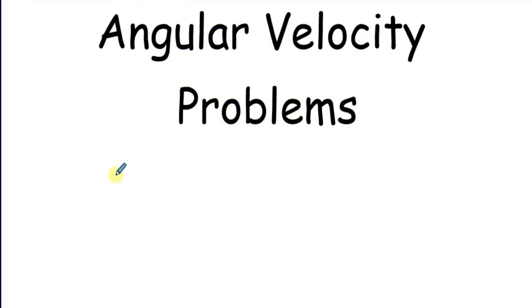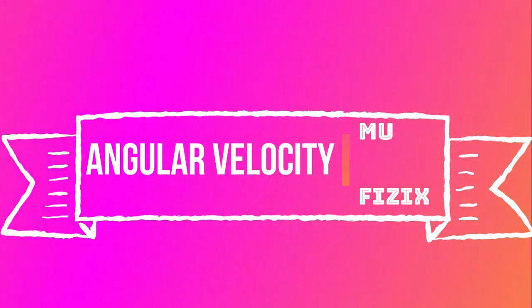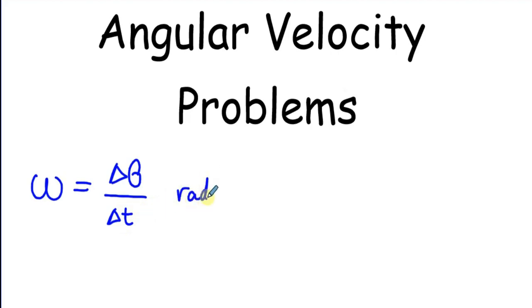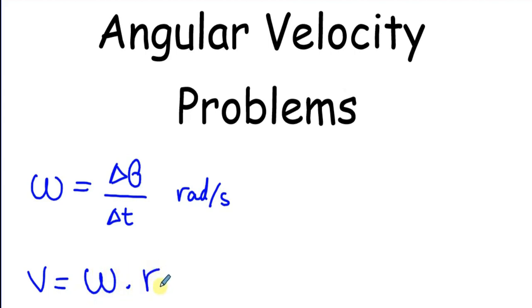In this video we are going to solve problems about angular velocity. The equations we need are: omega, the angular velocity, equals delta theta, the change in angular displacement, divided by delta t, time. The measuring unit is rad per second. The linear velocity v equals the angular velocity omega times r, where r is the radius, and v is measured in meters per second.